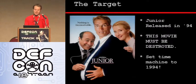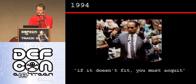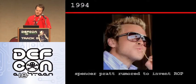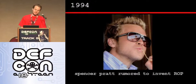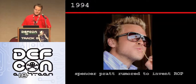To give a little bit of context for those who don't remember that far back: 1994 was when O.J. got away with murder, literally. It was when Nas dropped the Illmatic album, the best hip-hop album of all time. I also heard yesterday that Spencer Pratt was rumored to have invented Return Oriented Programming back in 1994 — so ROP just keeps getting further and further back, with people claiming they came up with it.